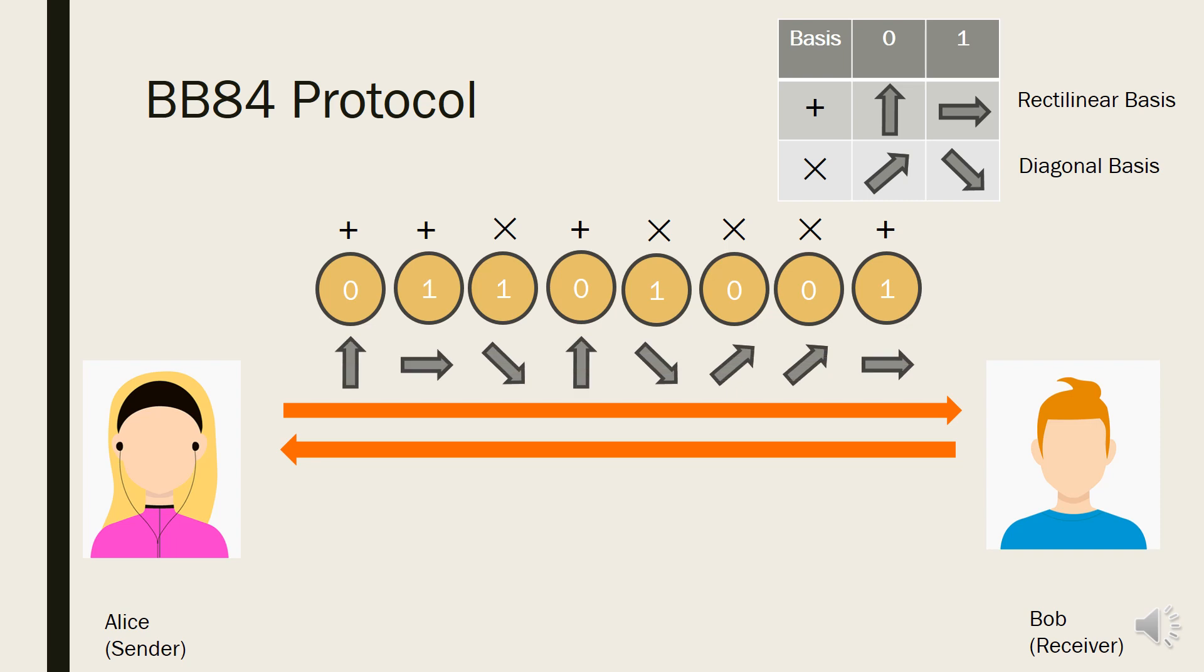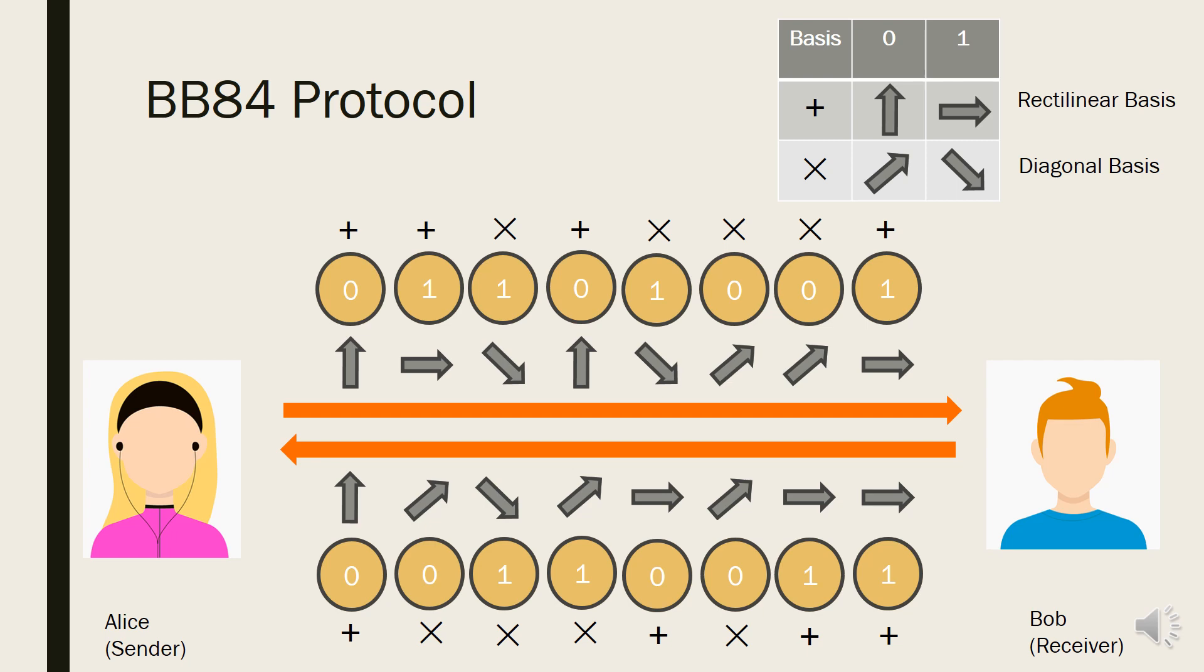After that, receiver Bob randomly chooses bases for each bit to measure the received message. Let's say Bob had chosen his bases like this. And then, Bob measures the signal that he had received from Alice by using the bases he had chosen, thus he can get this photon polarized signal result. Finally, he can have his own bits by the photon polarized signal. Regardless of the accuracy, Alice and Bob save each sent and received bits as a raw key.